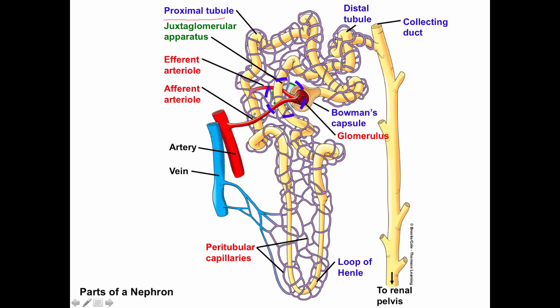Fluid continues to move through the nephron until it gets to the loop of Henle. Fluid moves down the descending arm of the loop of Henle and then up the ascending arm. The loop of Henle is the entire structure with its descending and ascending arms. Fluid from the loop of Henle then moves into the distal tubule, and finally the distal tubule drains urine into the collecting duct.